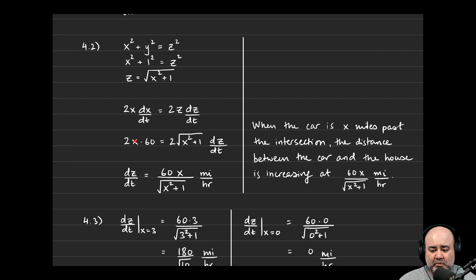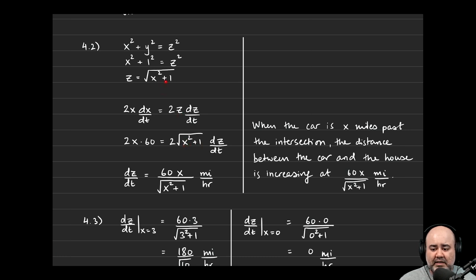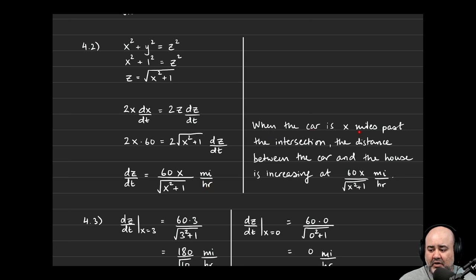Instead of x being 3, we replace it with x because we don't know how far past the intersection the car is. dx/dt is still 60 miles per hour. And z is just √(x² + 1). So dz/dt equals 60x divided by √(x² + 1) miles per hour. The interpretation: when the car is x miles past the intersection, the distance between the car and the house is increasing at that rate.